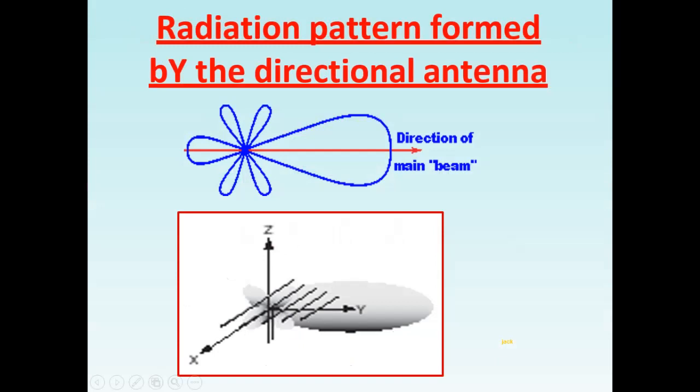Radiation pattern formed by the directional antenna. This is the radiation pattern. The Yagi-Uda antenna is unidirectional only. This is the direction of main lobe, the main lobe of the Yagi-Uda antenna.